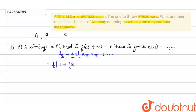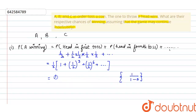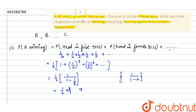Taking (1/2) as common, we get (1/2) times [1 + (1/2)^3 + (1/2)^6 + ...]. This is a GP, so we apply the formula 1/(1 - r), where r = (1/2)^3 = 1/8. Solving: (1/2) × (1 / (1 - 1/8)) = (1/2) × (8/7) = 4/7. So the probability of A winning is 4/7.